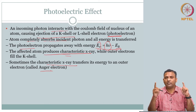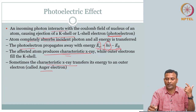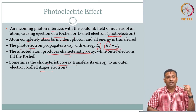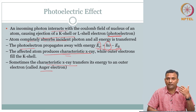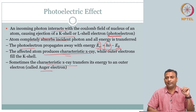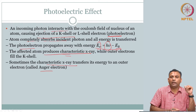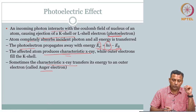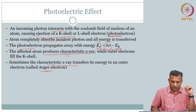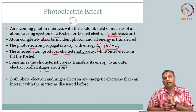The Auger electron's interaction with material is the same as what we already covered in particulate interaction. Whether it is a photoelectron or an Auger electron, their interaction with matter is exactly the same as particulate interaction. Even when electromagnetic radiation carrying X-rays interacts with tissue, you can get these particulate radiations — photoelectrons and Auger electrons.